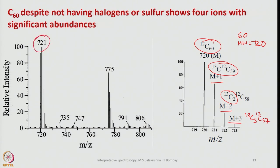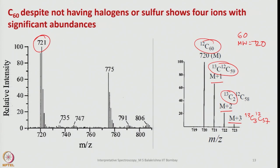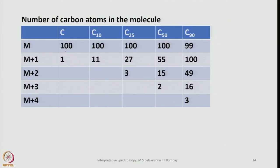The base peak and M+1 are shown here. What happens when the number of carbon atoms in the molecule increases? If the molecule M = 100 has 10 carbon atoms, M+1 peaks of about 11% are seen; with C₂₅ we see M+2 around 3–15–49%; and with C₅₀ and above, even M+3 becomes observable, reaching about 16% at C₉₀. This provides information about higher analogues of fullerene molecules.